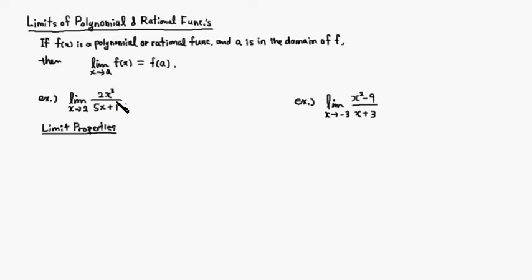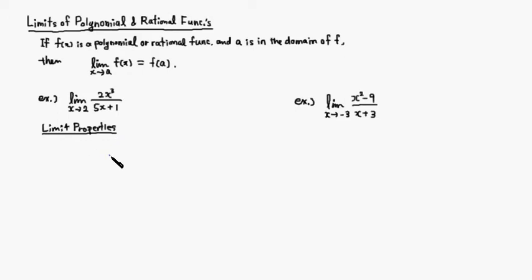Let's look at this example: the limit of 2x³ over (5x + 1) as x approaches 2. This is the limit of a rational function. You can see that 2 does not make the denominator 0, so 2 is in the domain. Let's use the limit properties to get the value, and then after that we'll apply this result.